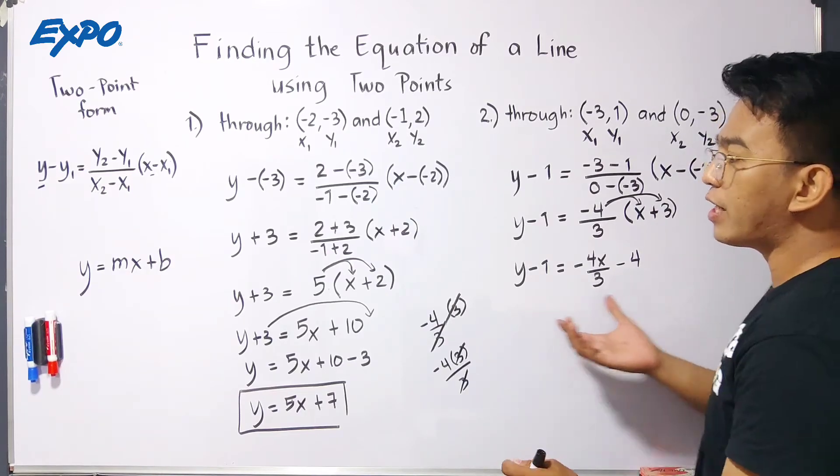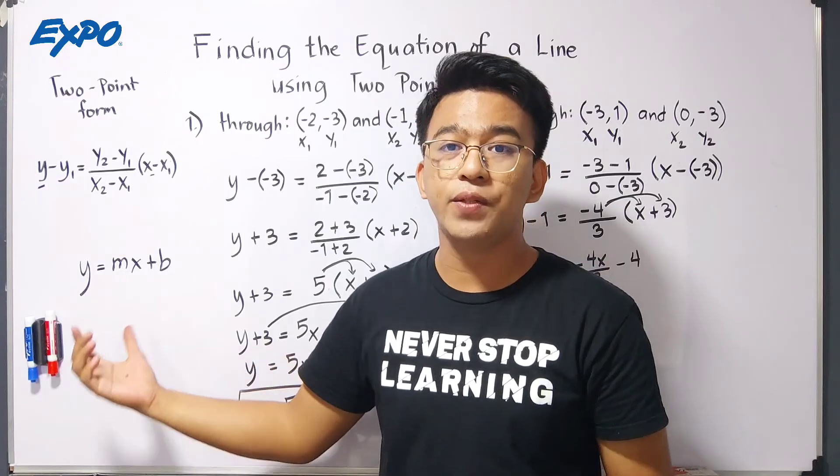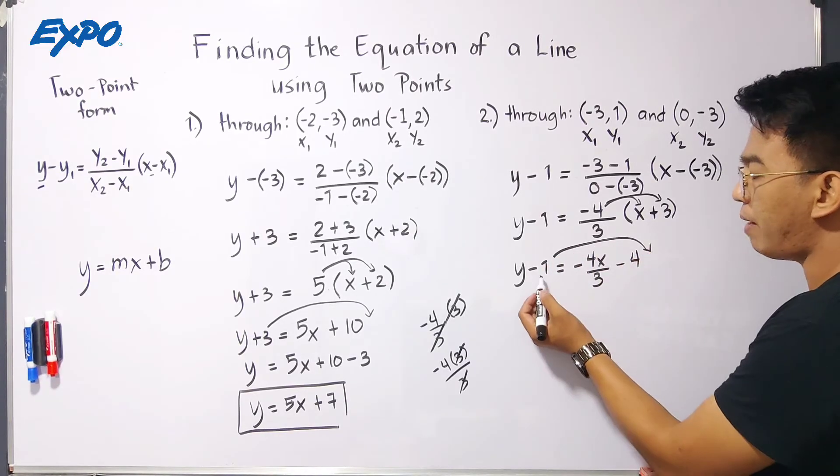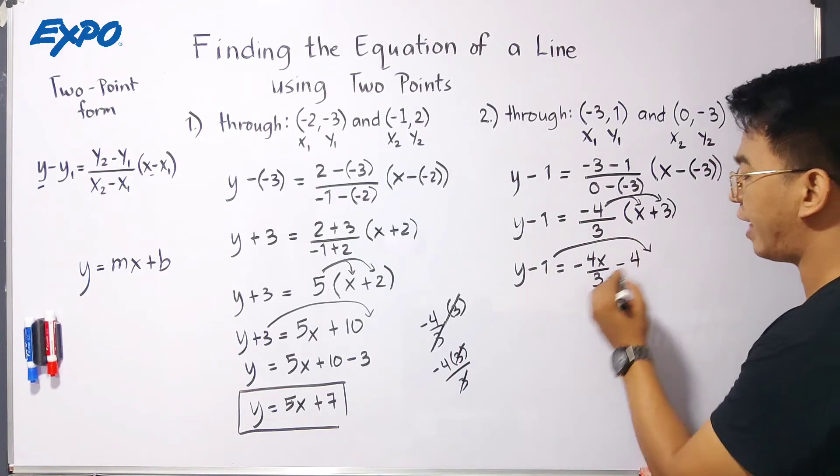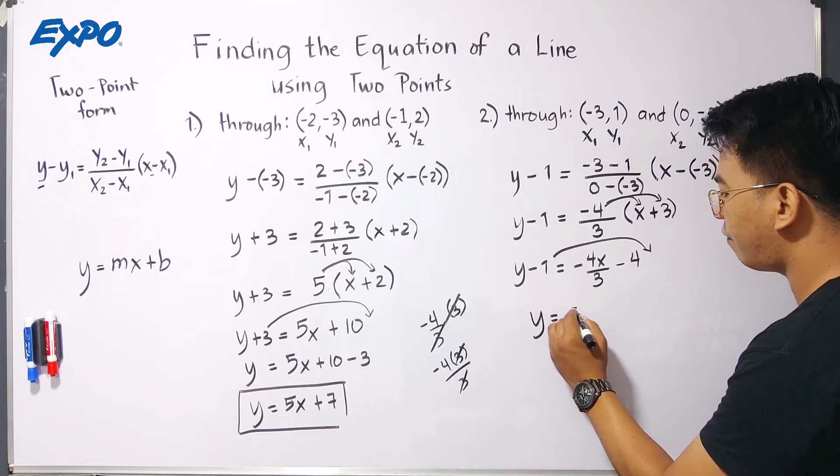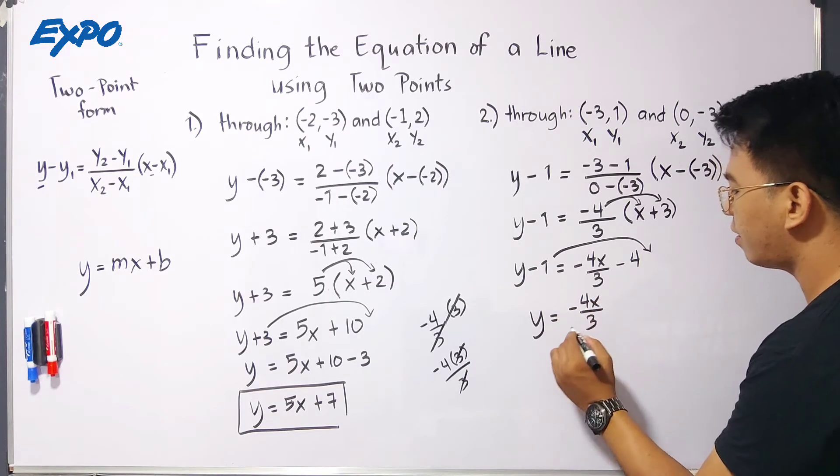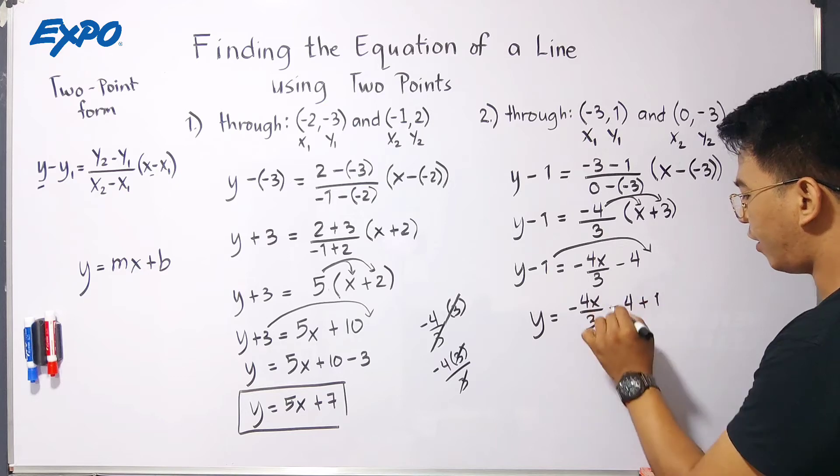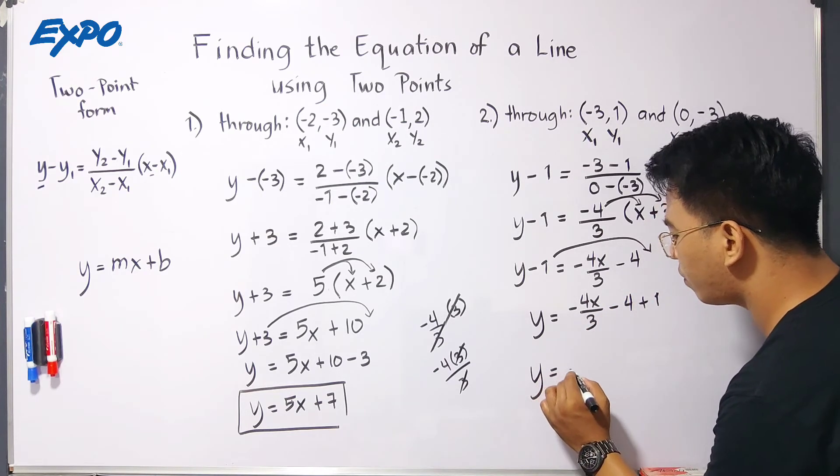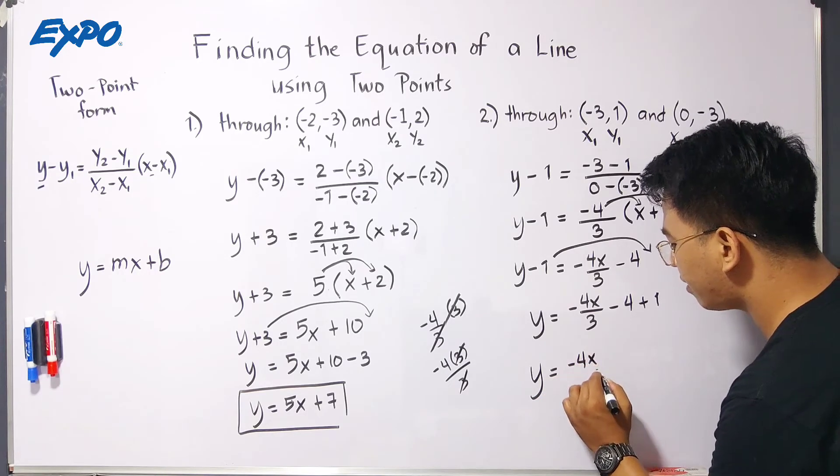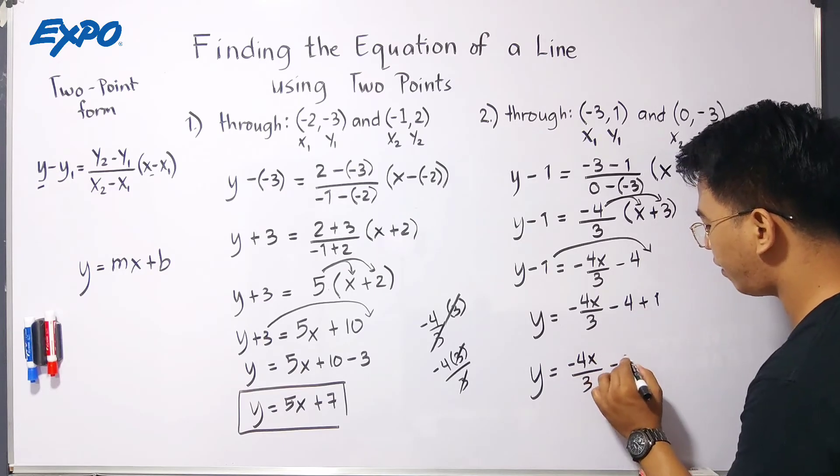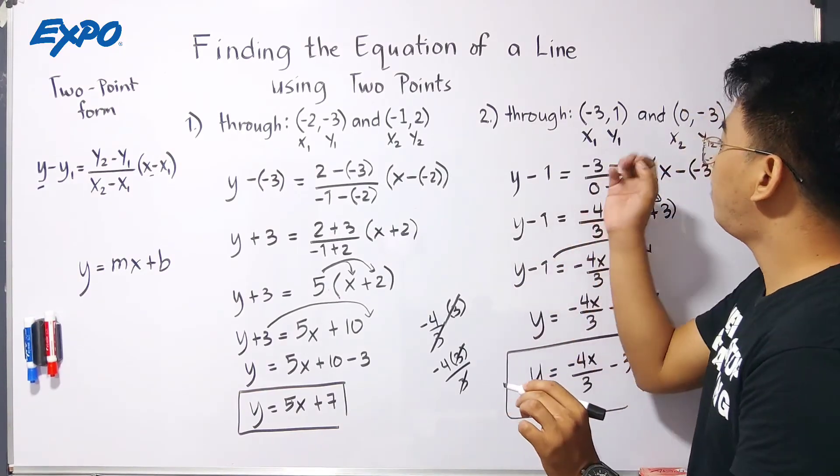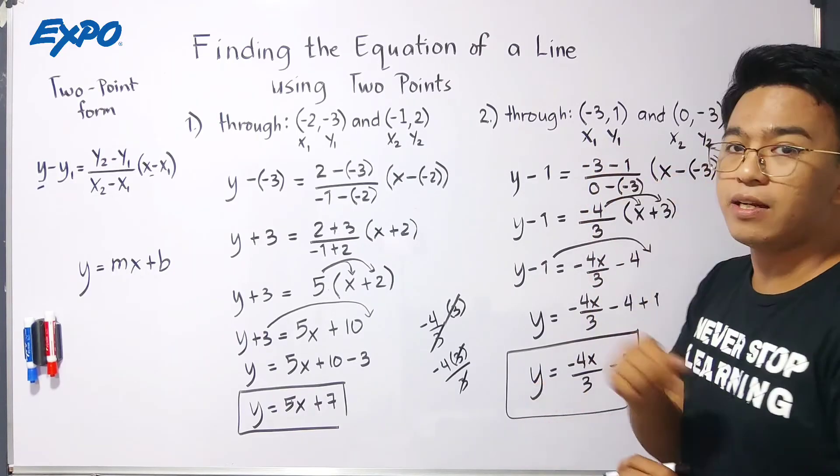But we're not yet done, guys. Because our target is to transform our final equation into y equals mx plus b. So, we will transpose this negative 1 to the other side of the equation. Remember, this is negative, so it will become positive on the other side. It will become y equals negative 4x over 3 minus 4. Then from negative plus 1. After simplifying, you have now y equals negative 4x over 3. Negative 4 plus 1 is negative 3. And this is now the final equation of the line passing through negative 3, 1 and 0, negative 3.